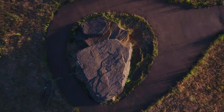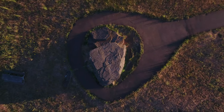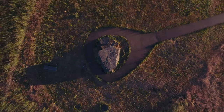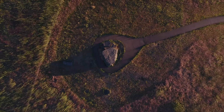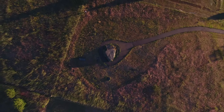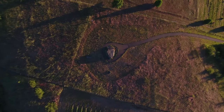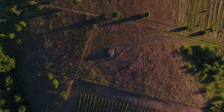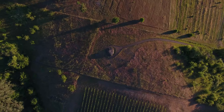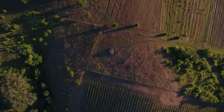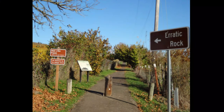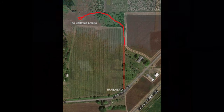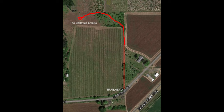On the other hand, some of the striations may only be from modern scratching by humans. The Bellevue erratic is now part of the Erratic Rock State Natural Site within Oregon's state park system. A short paved trail leads from the roadside at the valley floor to the top of the knoll, where the iceberg containing the Bellevue erratic became grounded during flooding.